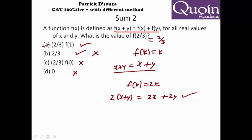So 2/3 into 2 will become 4/3. f(1) will be 2—it satisfies. So answer will be A. So here what we did was we didn't solve completely. We basically looked at the options and tried to eliminate the options and get the answer.